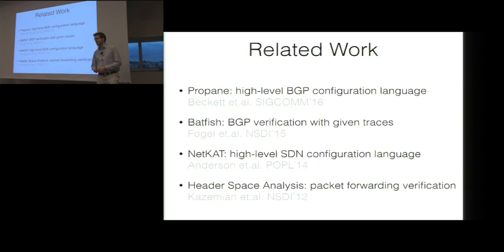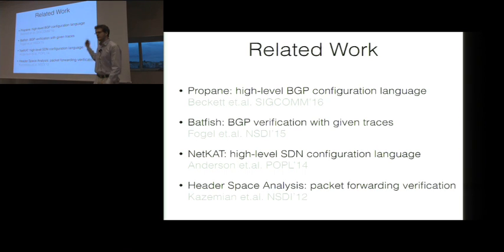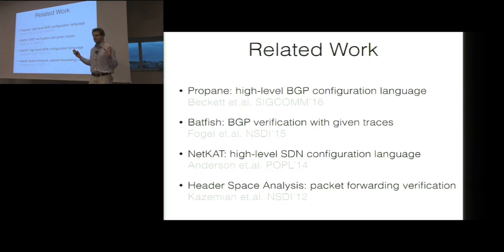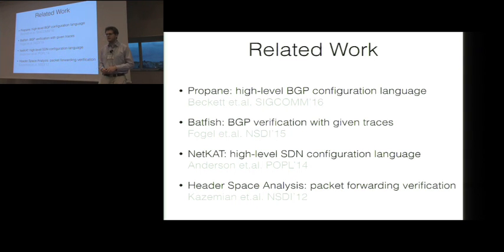BGP is a big problem that leads to many errors and is used by everyone on the internet, so there has been a lot of related work. Propane is a high-level language to configure BGP routers, compiled into lower-level languages installed on the router. BatFish, similar to our tool, verifies BGP configuration but only for a given set of traces instead of all possible traces. Netcat is a high-level configuration language for software-defined networks compiled into actual router configurations. Headspace Analysis did a similar analysis to ours, but for packets rather than routing information.